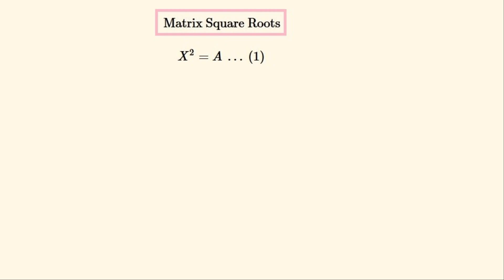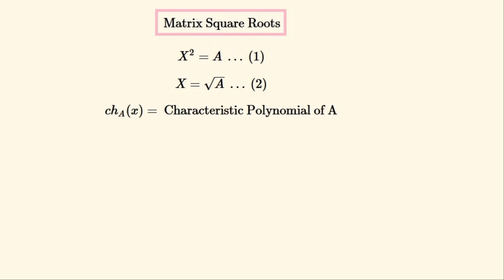What we want to find is the square root of the matrix A, where X is its square root. Here is the equation that most generally describes this, which may be manipulated so that the main square root is to be found. But this method can find more than one square root. We'll define this function to be the characteristic polynomial of the matrix A, subscripted accordingly, with X as its free variable.